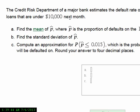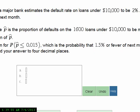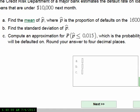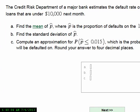The credit risk department of a major bank estimates the default rate on loans under $10,000 to be 2%. The bank will make 1,600 loans under $10,000 next month. So they ask us to find the mean of P-hat, where P-hat is the proportion of defaults on the 1,600 loans under $10,000 to be made next month.